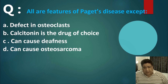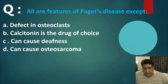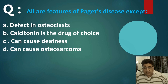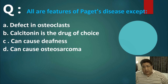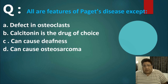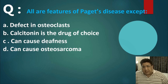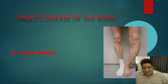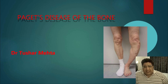The answer is B — calcitonin is not the drug of choice; it is the bisphosphonates. A defect in osteoclast is true — there is excess resorption and excess formation. Progressive sensorineural hearing loss does happen, and yes, it can cause osteosarcoma as a pre-malignant lesion for secondary osteosarcoma. So presenting to you: Paget's disease of the bone.